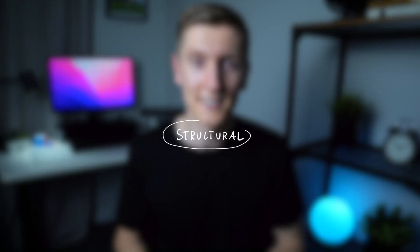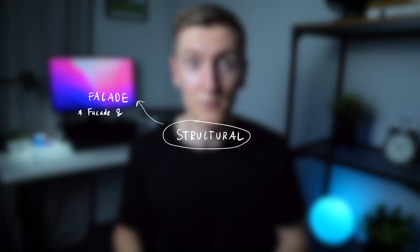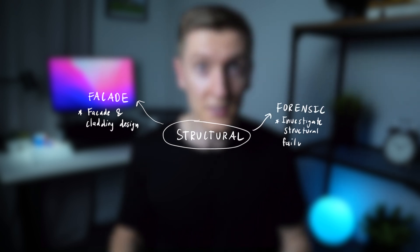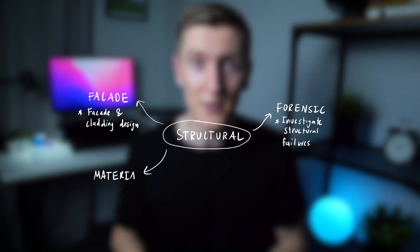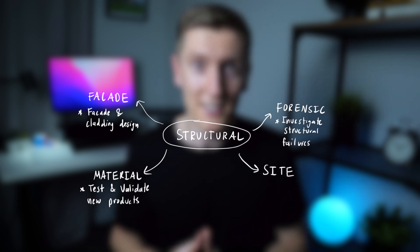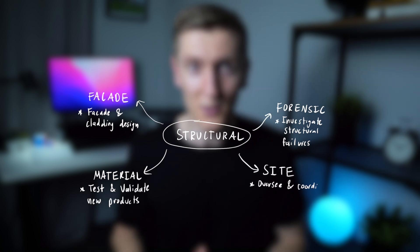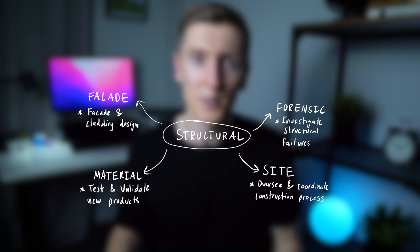For structural engineering there's a whole other collection of subspecialties. Facade engineers solely focus on facades. Forensic engineers investigate structural failures, determine their causes, and recommend solutions. Material engineers test and validate new materials and products. And site engineers organise and coordinate the actual construction process and are responsible for delivering the project to the client on time. These lists aren't complete, but in general these are the main subspecialties.